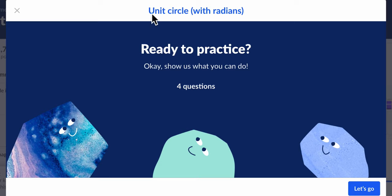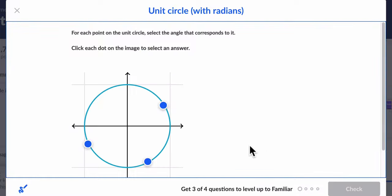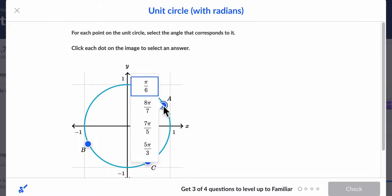Hello, welcome. In this video, we're going to look at the unit circle with radians. Let's check it out. For each point on the unit circle, select the angle that corresponds to it. Alright, here's our first one.